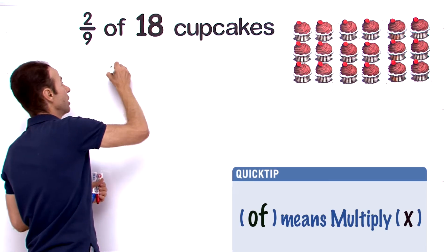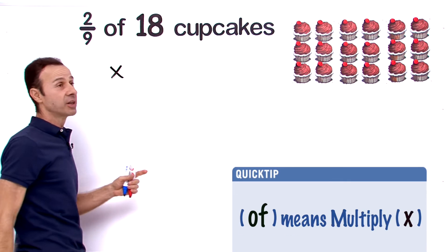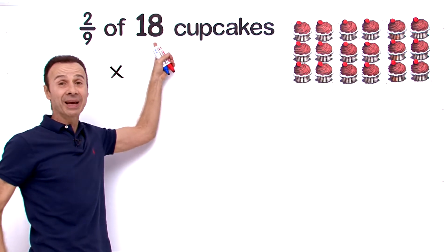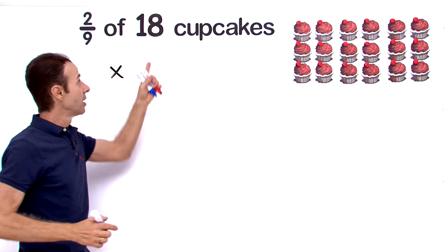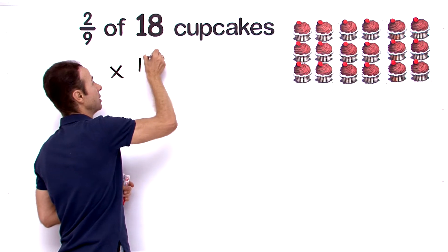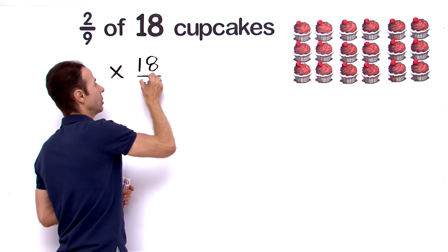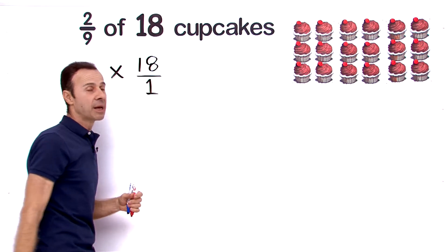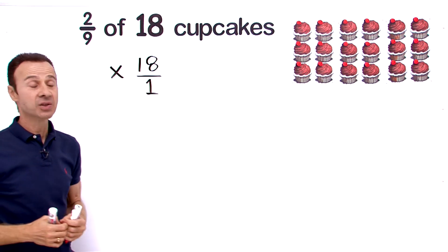Next thing you need to realize: if you've got a whole number like 18 whole cupcakes, written as a fraction it will be 18 over 1. A whole number is always over 1 if you want to write it as a fraction.